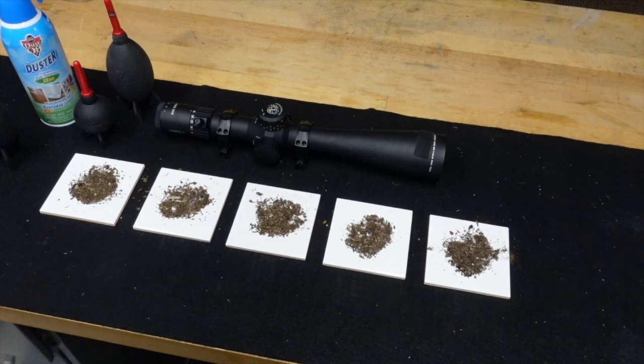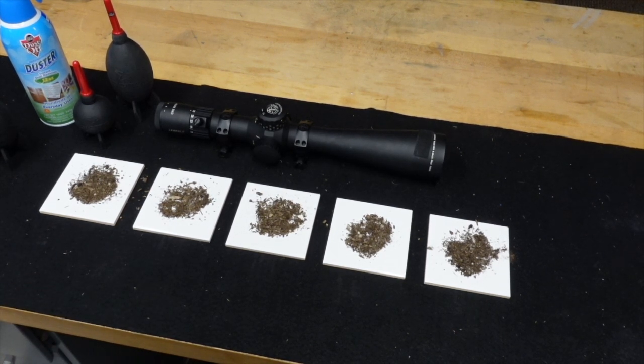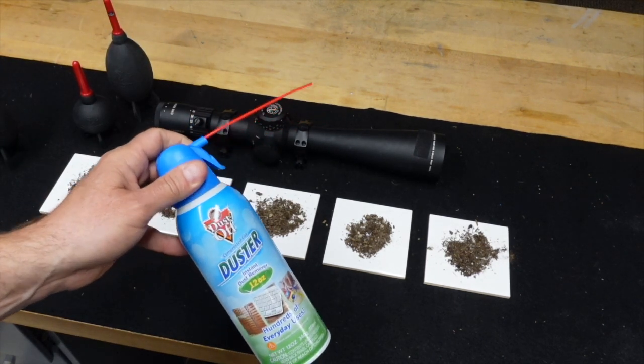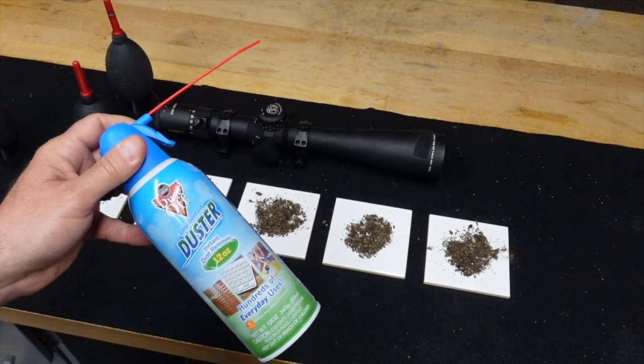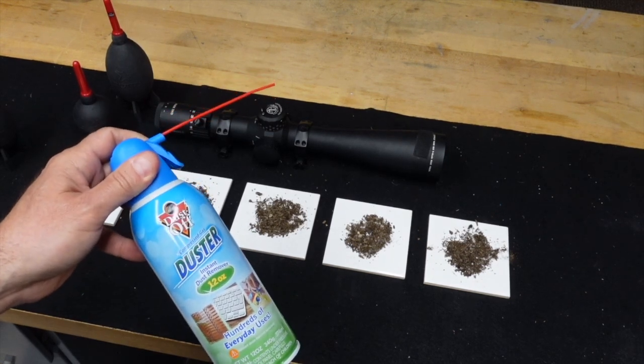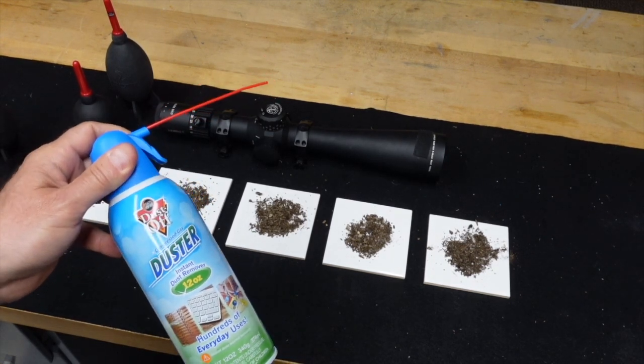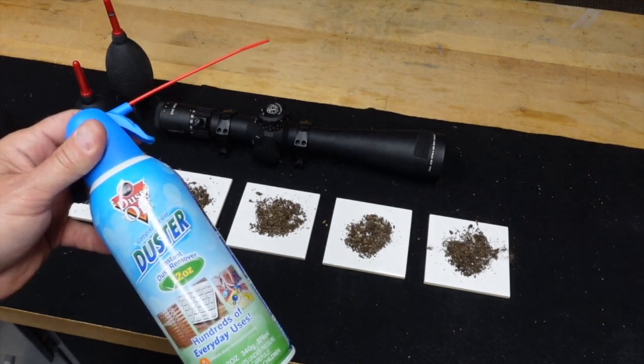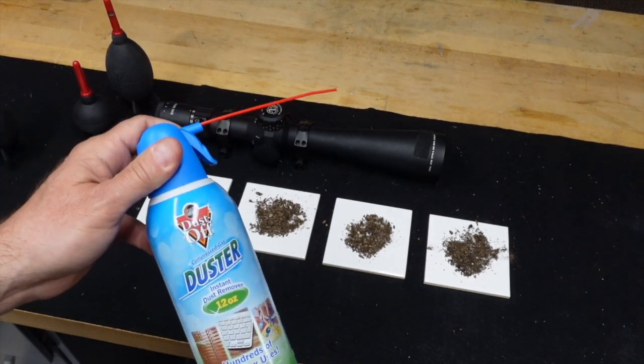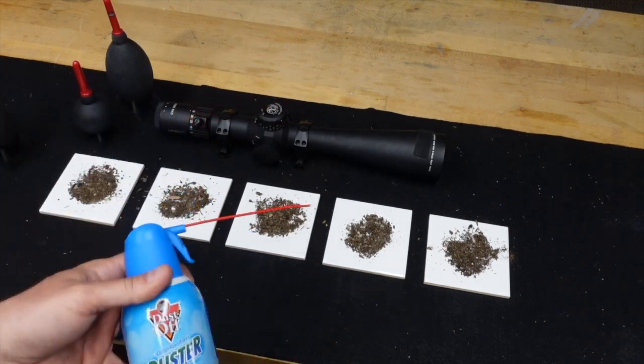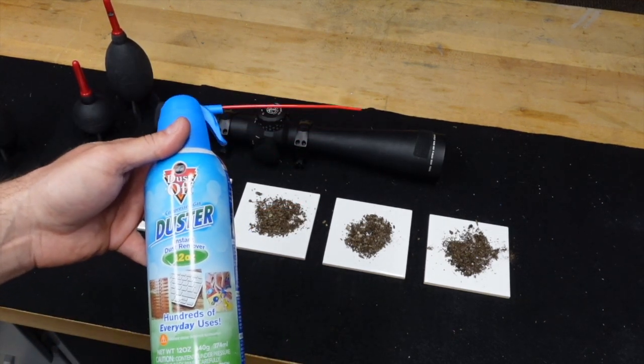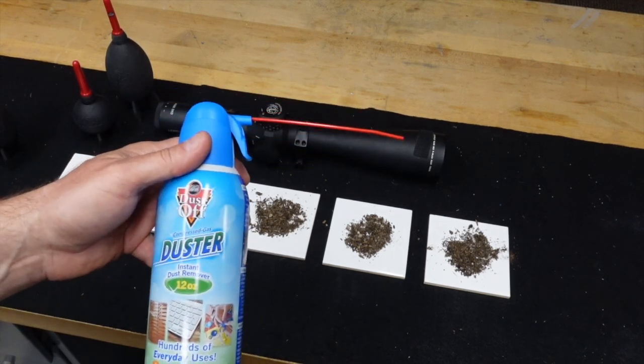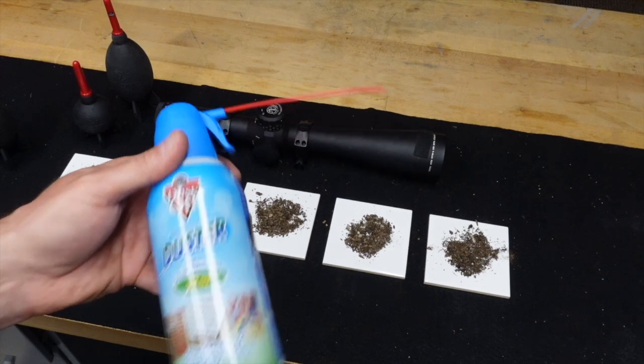If you've seen my video on my friend who unfortunately turned one of these cans slightly upside down while spraying a very hot scope from being in the desert sun and shattered the front objective lens, then you're probably wondering what are my options if I don't want to use compressed air. There are other reasons obviously - there's propellant involved and some people are environmentally conscious about some of the propellants.